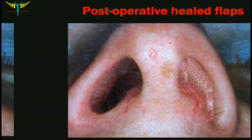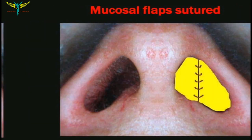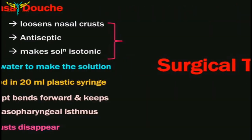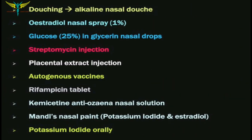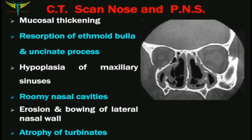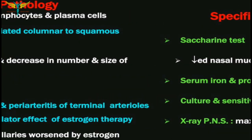In summary, this covers all aspects of atrophic rhinitis: the definition, types, etiology, pathology, signs, symptoms, investigations, and management. If you like this video, please subscribe to the channel.